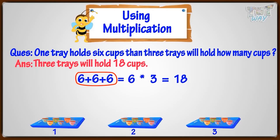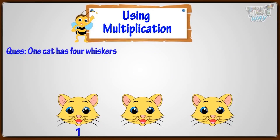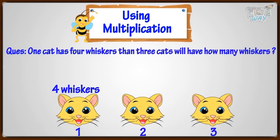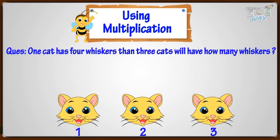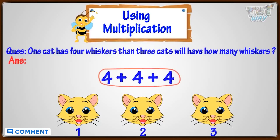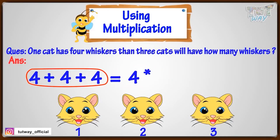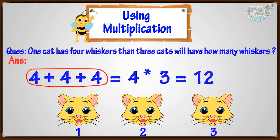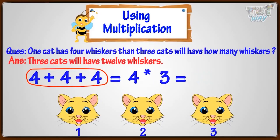So eighteen cups will be there in three trays. Let's move on to another question. One cat has four whiskers, then three cats will have how many whiskers? We need to add the number of whiskers, so it's a problem of repeated addition: four plus four plus four. Repeated addition problems can be written as a multiplication sentence, so we can write it as four multiplied with three, and four times three equals twelve. So three cats will have twelve whiskers.